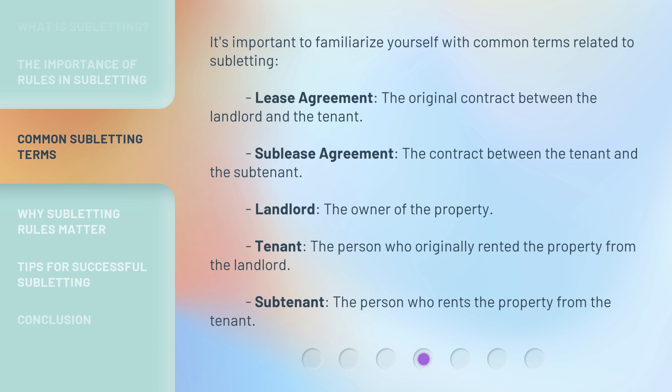Landlord: the owner of the property. Tenant: the person who originally rented the property from the landlord. Subtenant: the person who rents the property from the tenant.